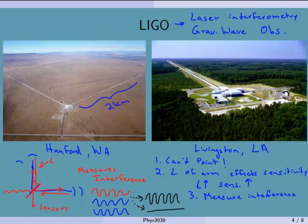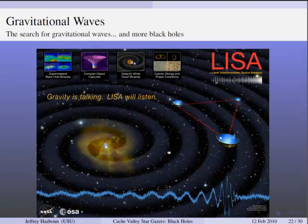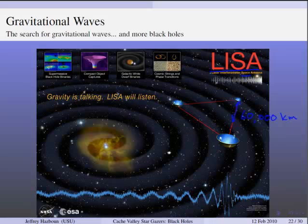These two LIGO detectors were built by the US. There's also one in Italy called Virgo, and others in Europe. Another planned detector is called LISA — the Laser Interferometer Space Antenna — which would live in space. The three spacecraft would be something like 60,000 kilometers apart from each other, forming a triangle, and would orbit around the Earth. Because they're so far apart, they're even more sensitive.